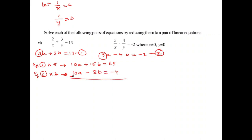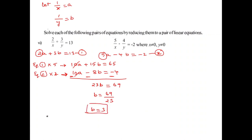Multiplying equation 1 by 5 gives 10A plus 15B equals 65. Multiplying equation 2 by 2 gives 10A minus 4B equals minus 4. Subtracting: A cancels, leaving 23B equals 69, so B equals 3.